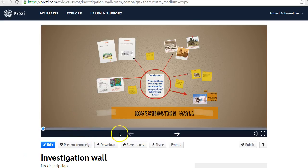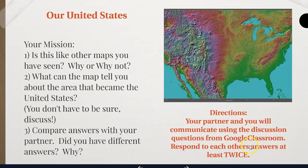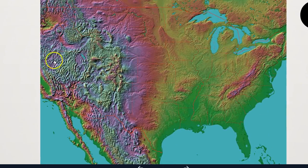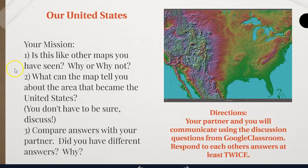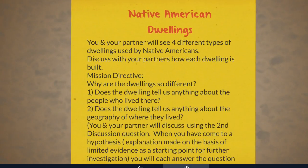If you haven't done a Prezi before, it's really simple. What you're going to be doing — you see this down here — you click, and it brings you to different things. Our United States — your mission: is this like other maps you have seen? Why or why not? What map are we talking about? The one right here. If you wanted to, you can click on it and it's going to bring you in. Click out here, brings you back out. As you're going along, you just click the button down here.